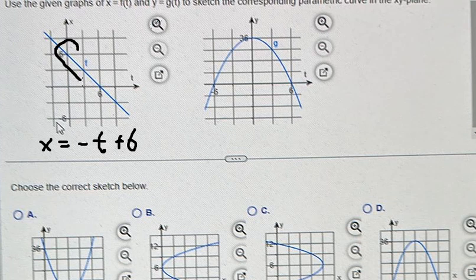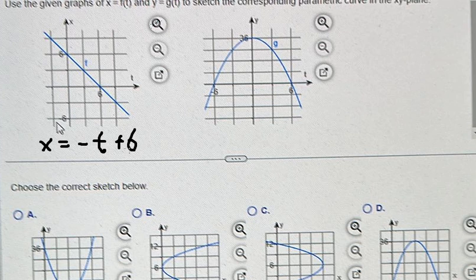Because the line, they go down in this way with one unit. That's why we have negative 1 and we have 6. When t equals to 0, we got x equals to 6.